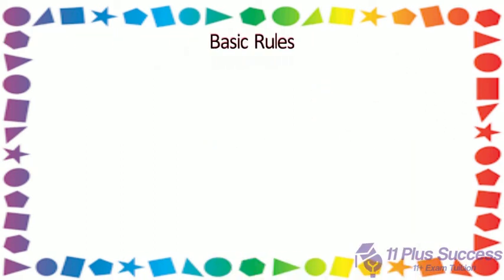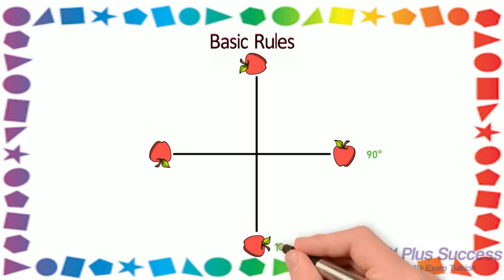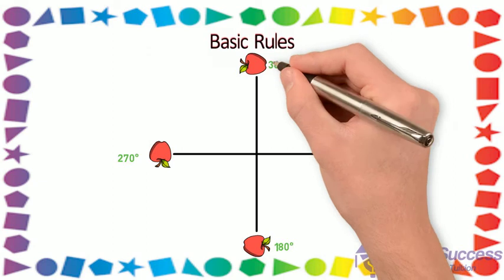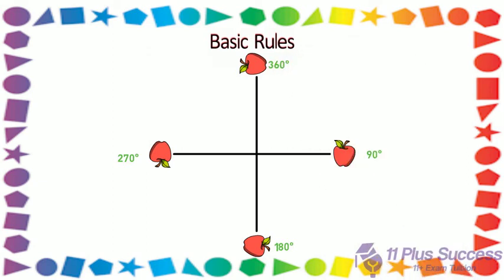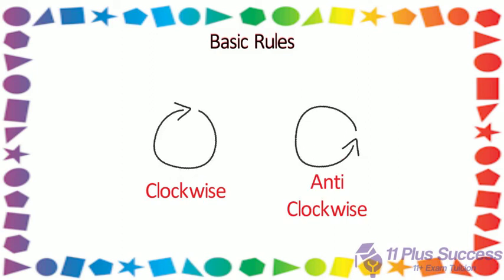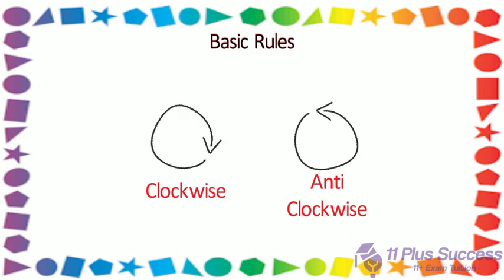Basic rules — to rotate an image, you need to know the following things: 1. Angles: 90 degrees, 180 degrees, 360 degrees. 2. Direction: clockwise or anticlockwise. 3. Center of rotation: center point.